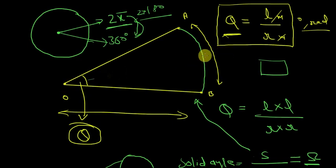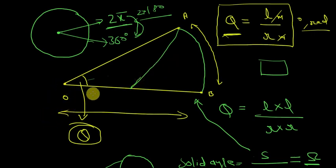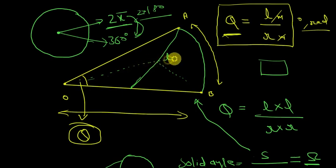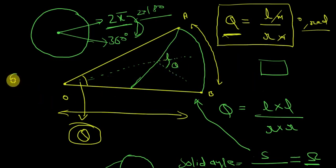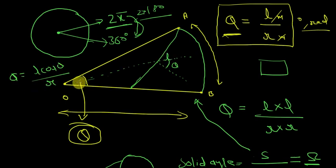Now what if the surface is not oriented normal to point O? If the surface is tilted, we take the normal to it, measure the angle theta between the surface orientation and the normal direction, and take the cos theta component. So the angle becomes l·cos(theta) divided by R — it's simple. This definition of angle always uses the approximation that the curve is taken as a straight line for small angle approximations.